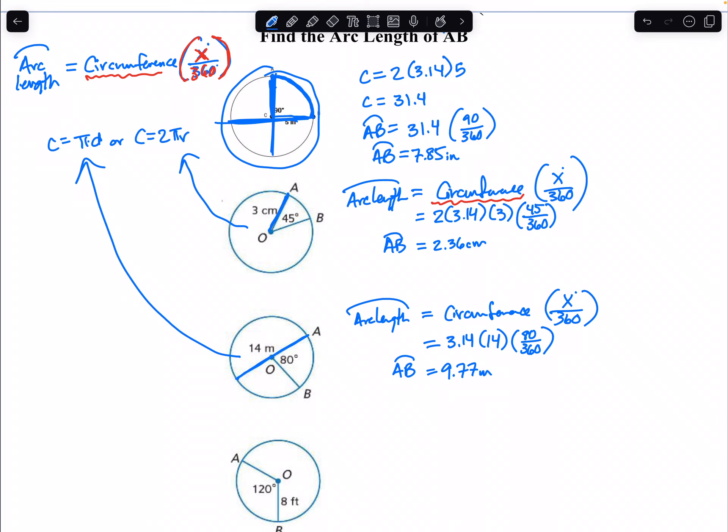Our last example, we have the radius. So the formula would be 2 times pi times the radius, multiplied by the angle that we're interested in, 120 over 360. Plugged in the calculator, 2 times pi times 8 times 120 over 360. And the arc length here is 16.75 feet.